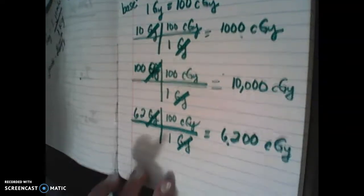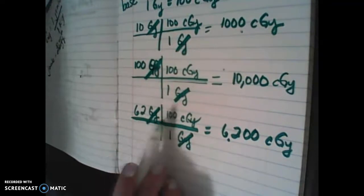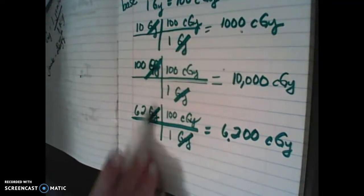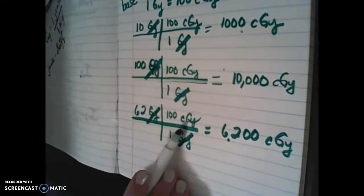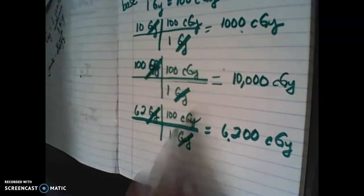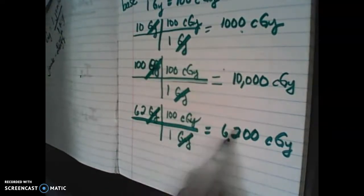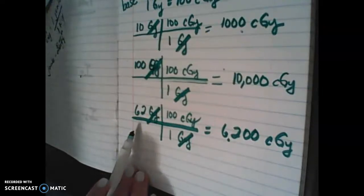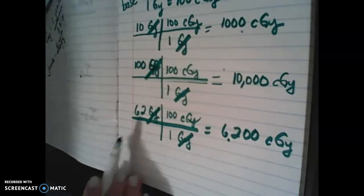You see 62 times 100 — you're moving from the large unit, the gray, to the small unit, the centigray. So we know if it's a small unit, we have to have more of them in order to equal the same amount in the large unit.